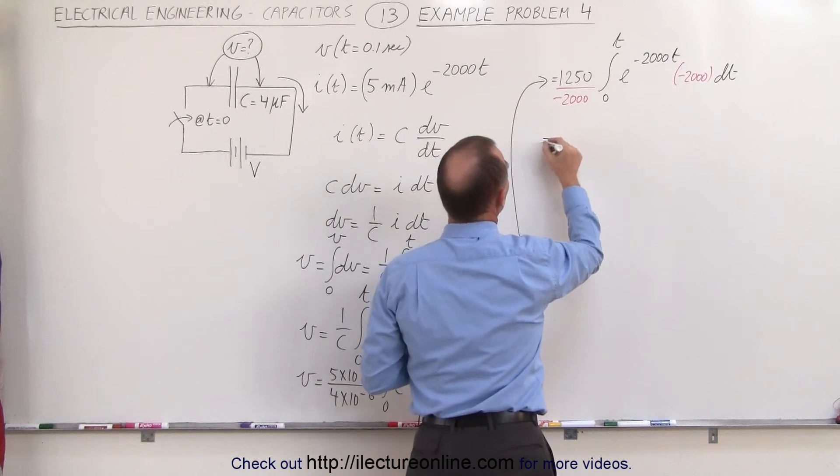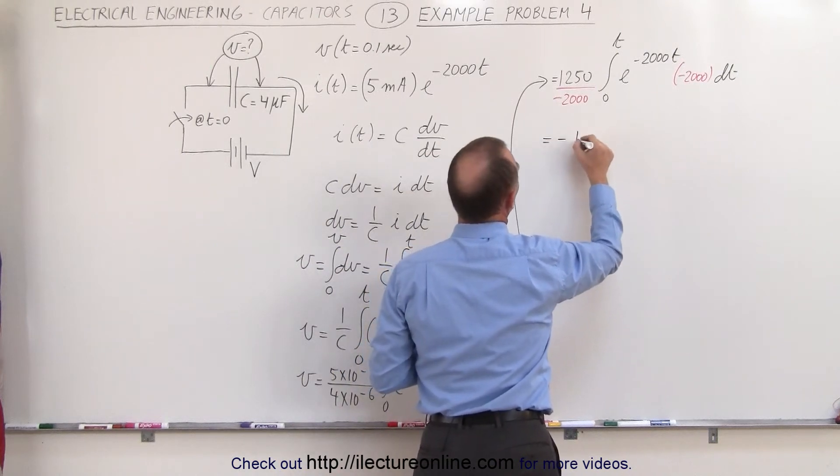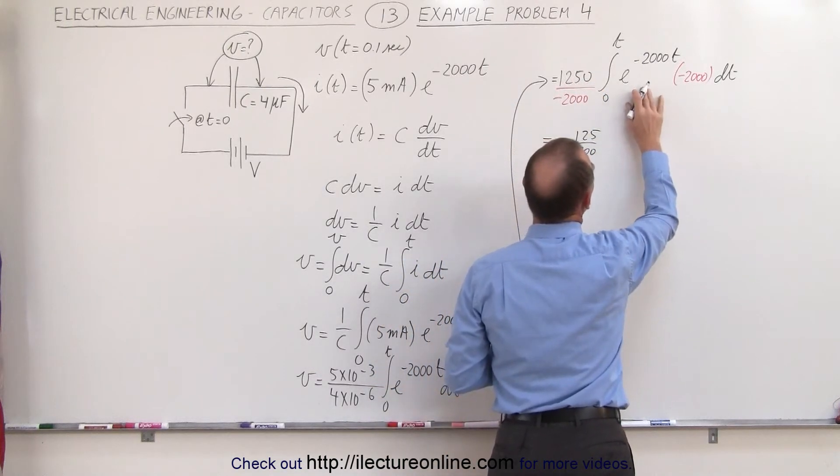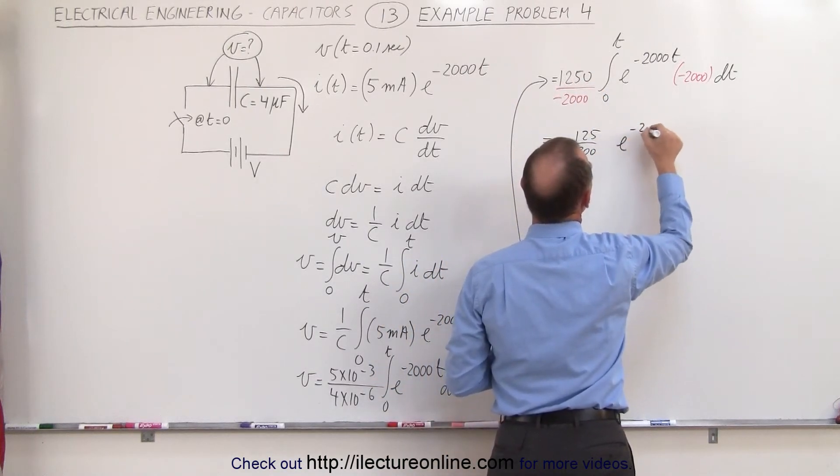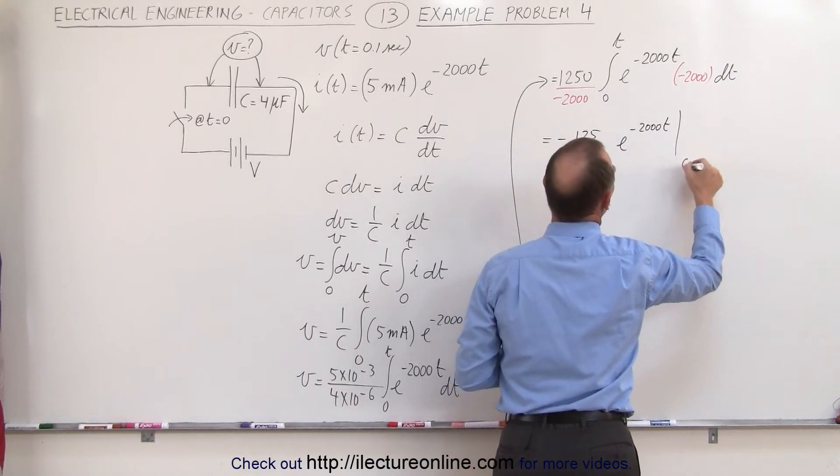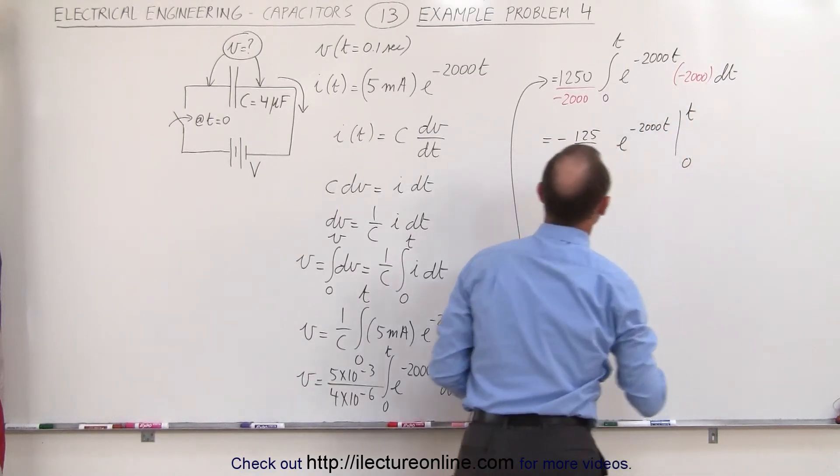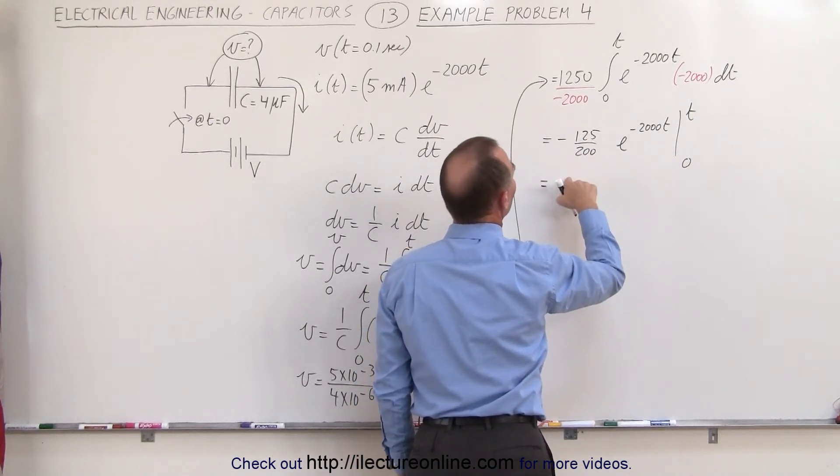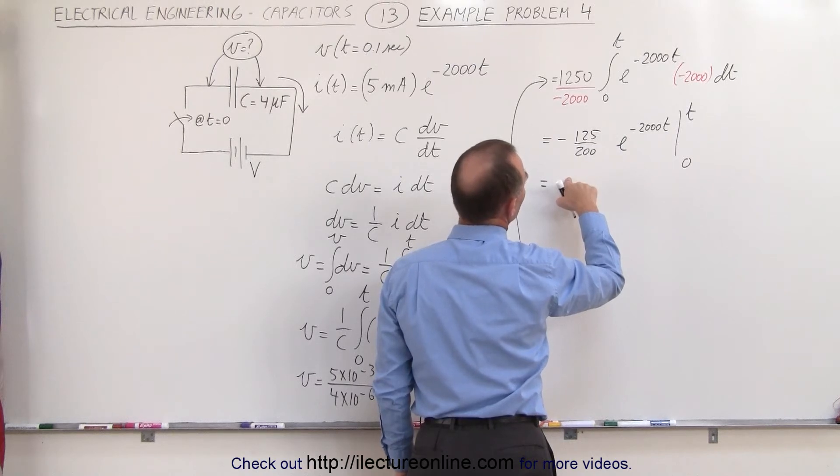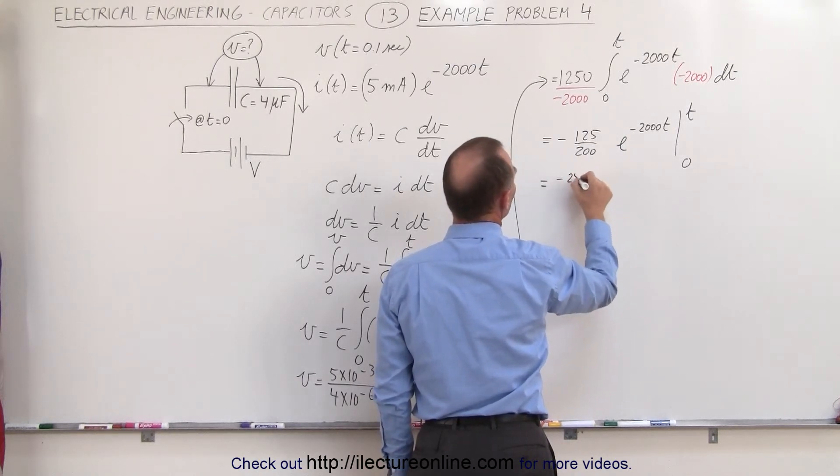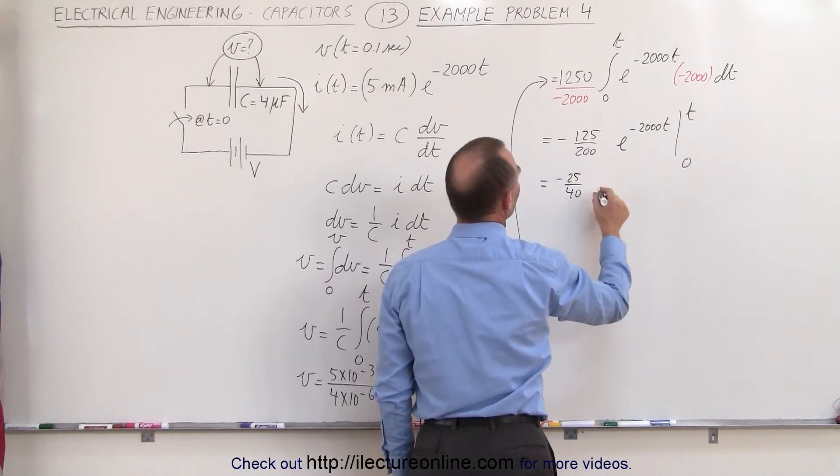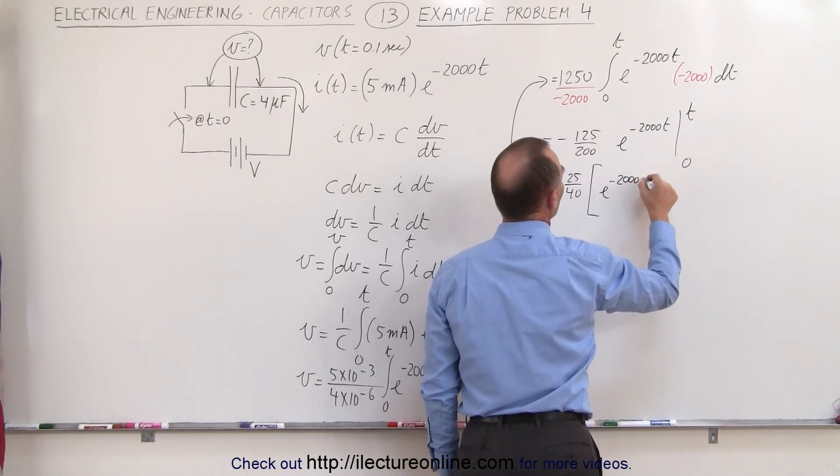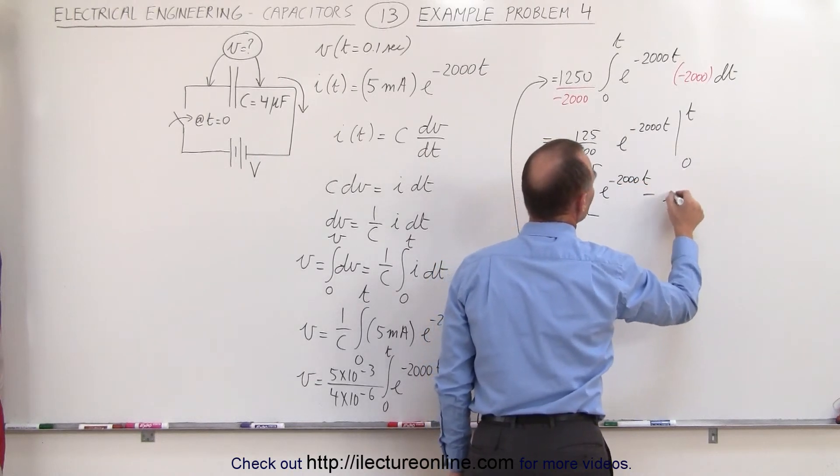Next I can go ahead and integrate. So this is equal to minus 1250 over 2000 times the integral of this which would be e to the minus 2000 t evaluated from 0 to t. This is equal to, they're both divisible by 5, so 125 divided by 5 would be 25. So minus 25 over 40 times when I plug in the upper limit I get e to the minus 2000 t minus when I plug in the lower limit I get e to the 0.